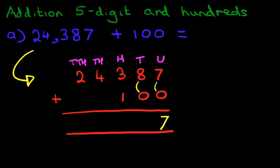Tens column, 8 plus 0. Again, nice and simple, it's 8. The hundreds column, we have 3 plus 1, that's 4.